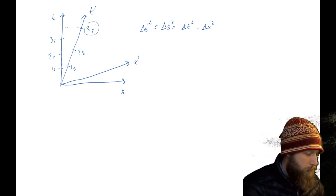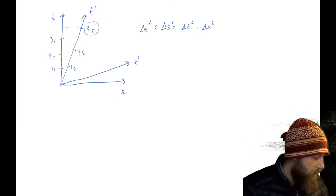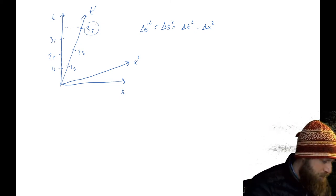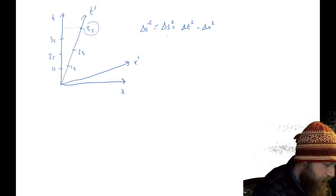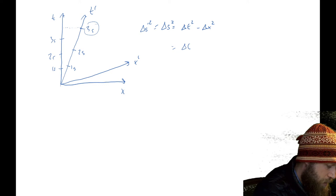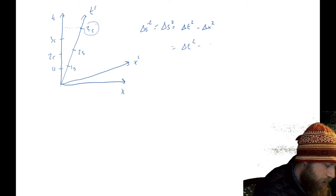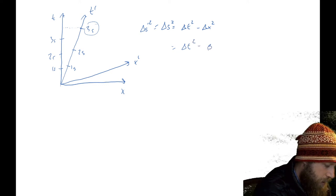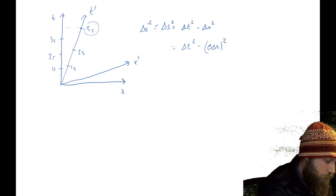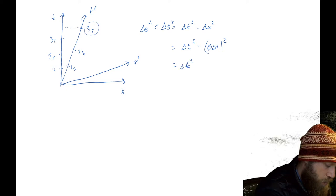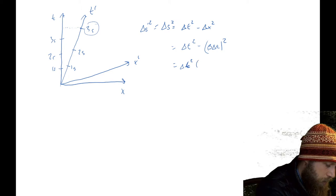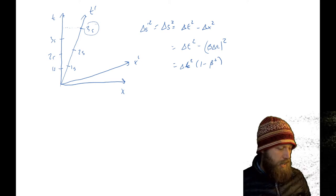By doing this, if you remember, and by understanding the slope of that t prime is beta, we basically found that we could then write this as delta s prime squared, we could write this as delta t squared, minus this beta delta t, also squared. If you remember, we factored that out, we got a delta t squared, delta t squared that we factored out, we got a one minus beta squared, that we basically could bring out of there.